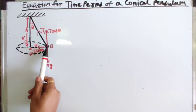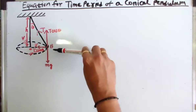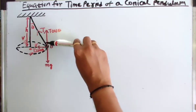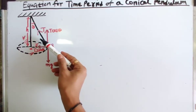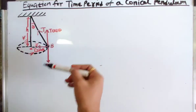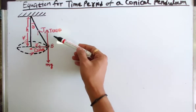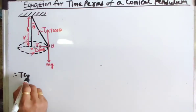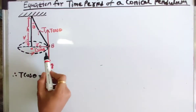When this bob is moving in the horizontal circle, the forces acting on it are: its weight mg acting vertically downward, and tension T along the string. This tension T can be resolved into two components: vertical component T cosθ and horizontal component T sinθ. The vertical component T cosθ balances the weight mg, so we write T cosθ = mg.